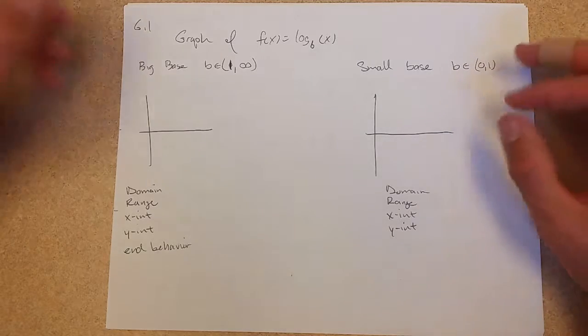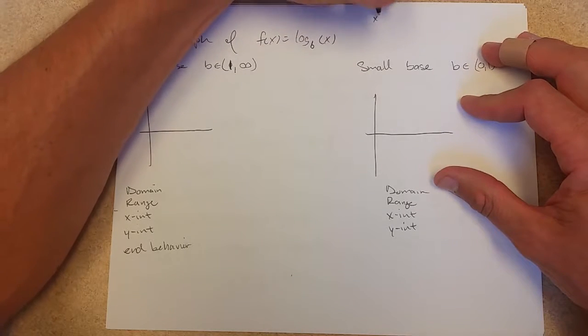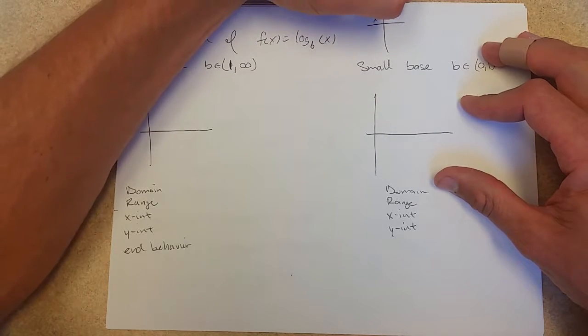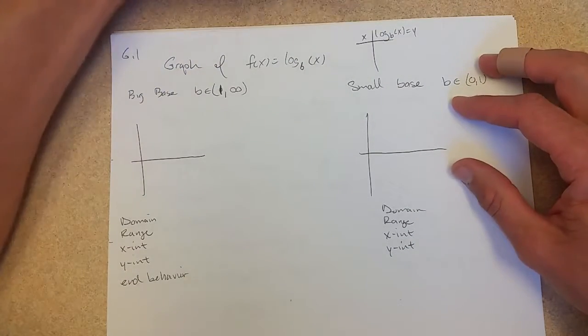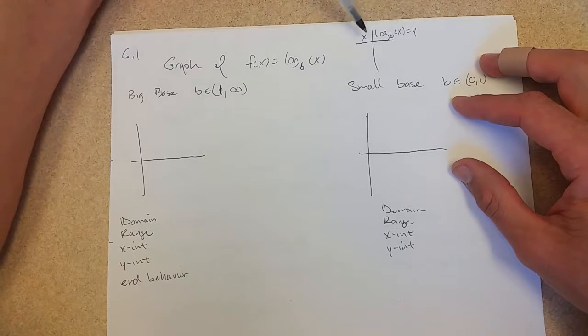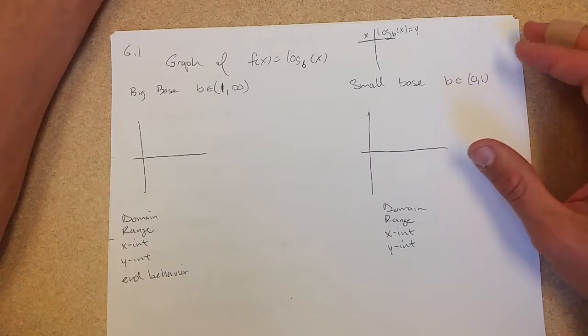The way we're going to graph, I could make a table of values x, except in this way I actually would want to pick, instead of picking x, I'd want to pick the y value and then get the x.